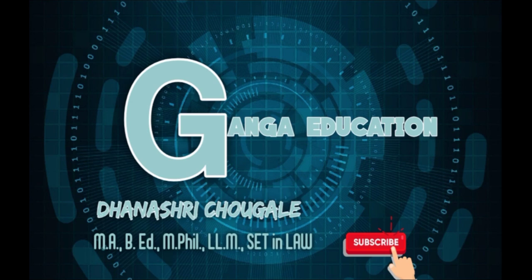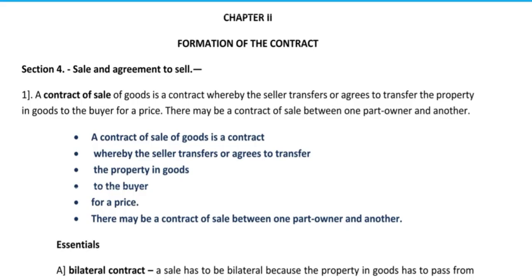So let's get started. This is Chapter Number 2 of the Sale of Goods Act 1930, that is Formation of Contract. Section 4 — Sale and Agreement to Sale. Subsection 1: a contract of sale of goods is a contract whereby the seller transfers or agrees to transfer the property in goods to the buyer for the price. There may be a contract of sale between one part owner and another.